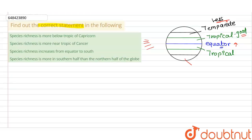The last area is the arctic region, where you will find very low species richness and species diversity. So, as we move from the equator either to the north or to the south, the species richness and diversity continuously decrease.